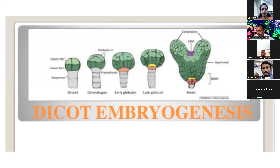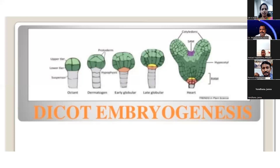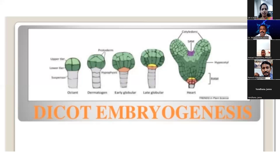Gynoecium is also known as pistil, carpel, ovary, or megasporophyll? Gynoecium is also called pistil. And carpel is also known as megasporophyll — that is the answer.